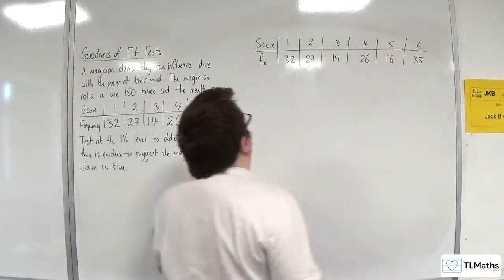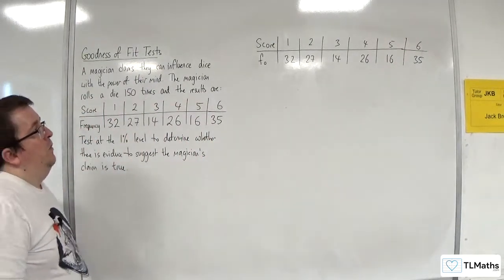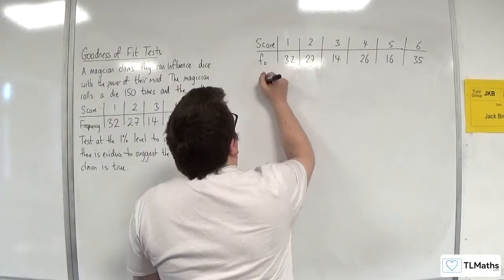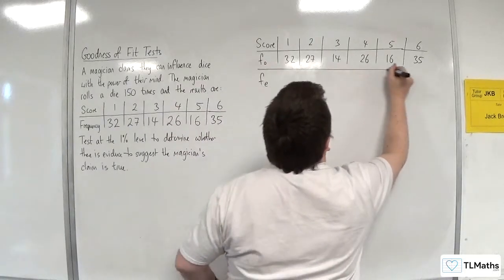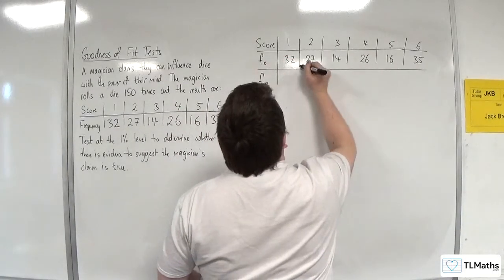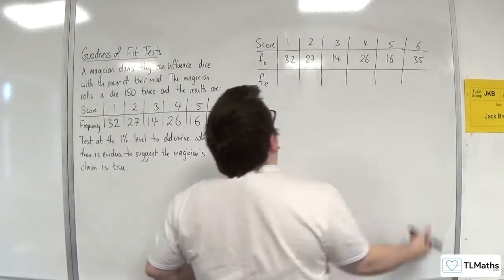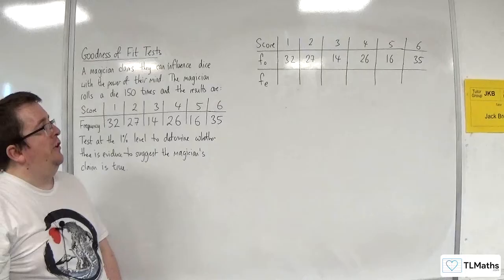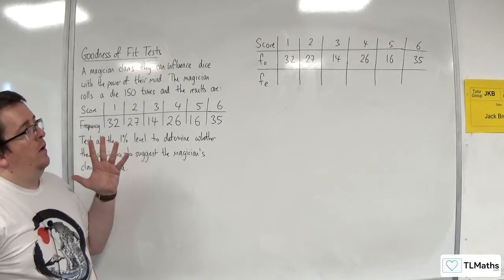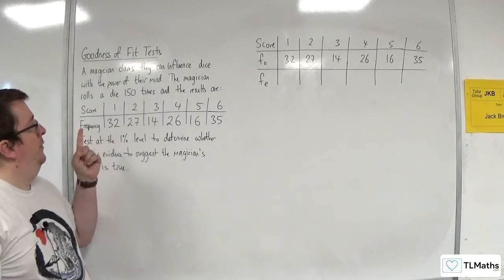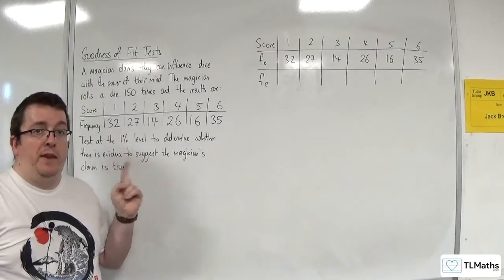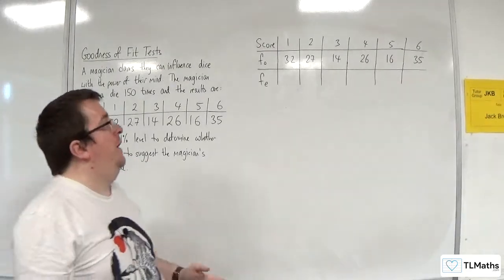Right, so now we want the expected frequency. Now, our expectation here is that the die is fair. And so, if there were 150 rolls, okay, divide that by 6, and we get 25.